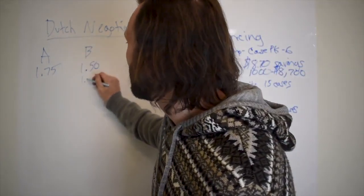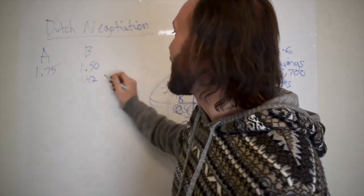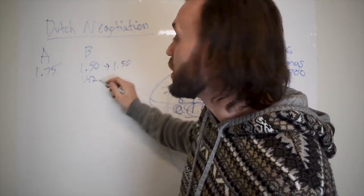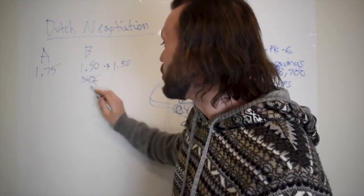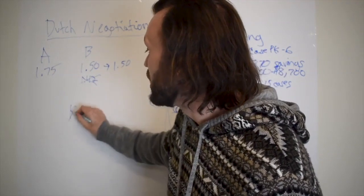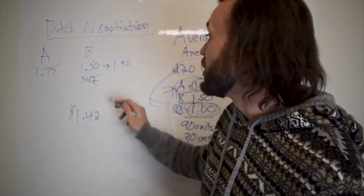I need this product for $1.42 and they're going to come back and say, nope, we're standing firm at $1.50. No way can we go down to $1.42. Absolutely not. The goal here is to get the product for $1.42 because that's the price you need it at to make money.